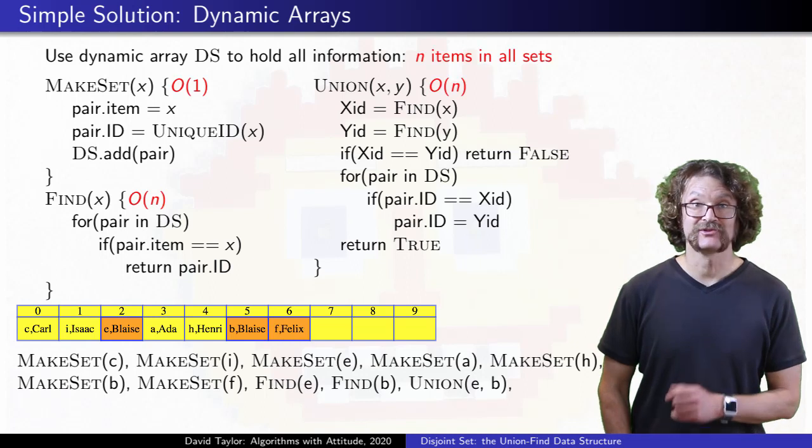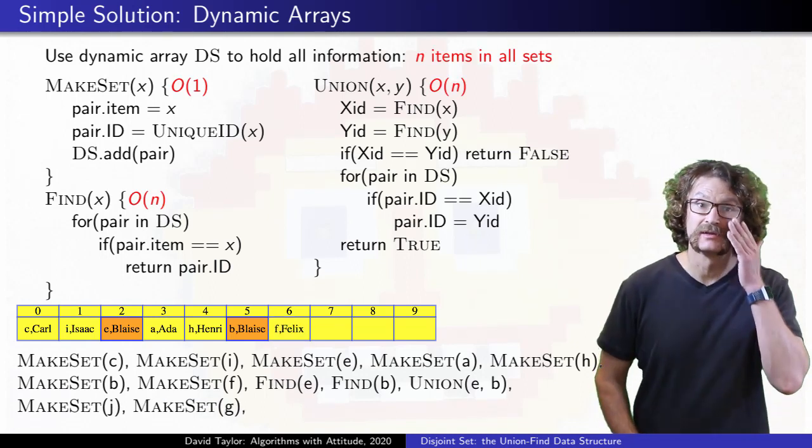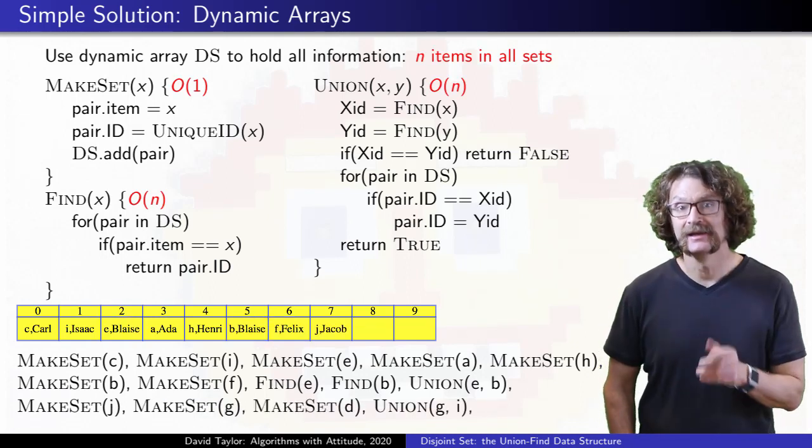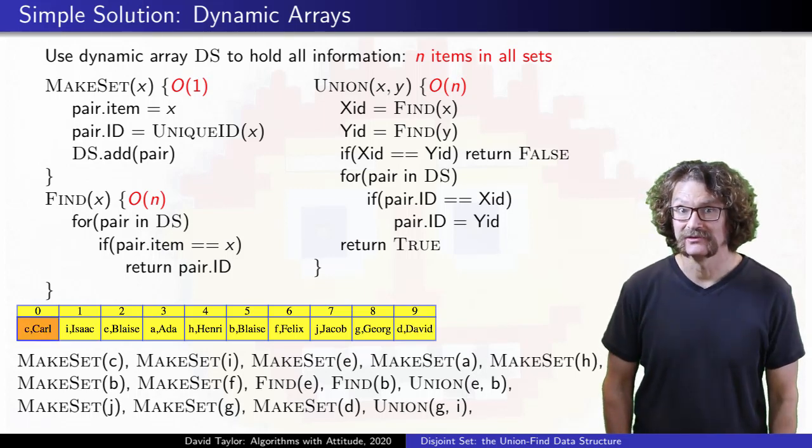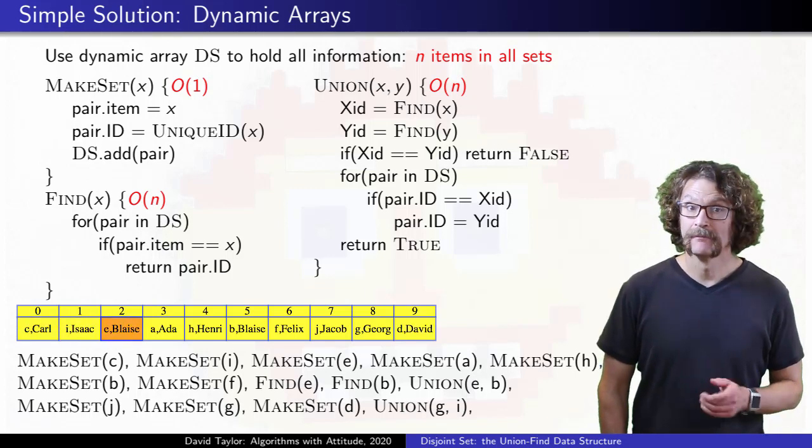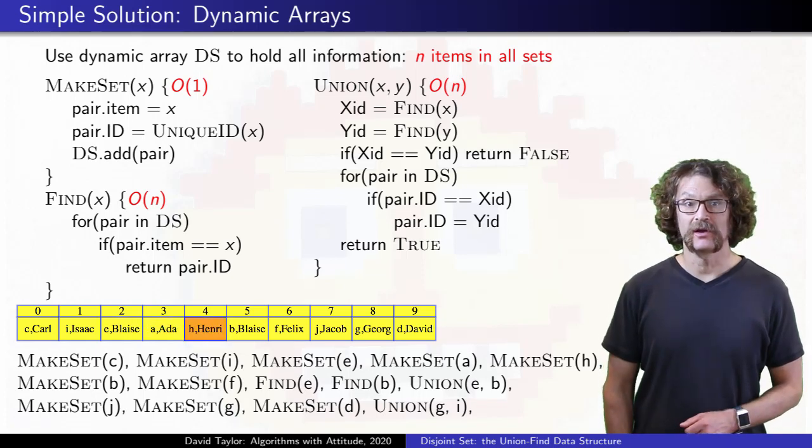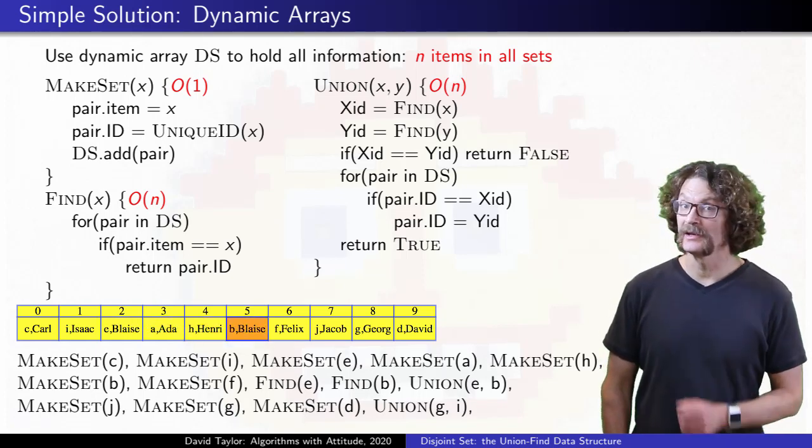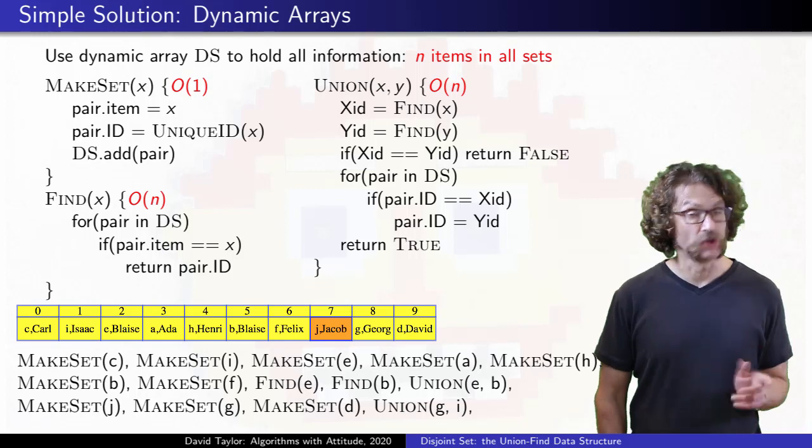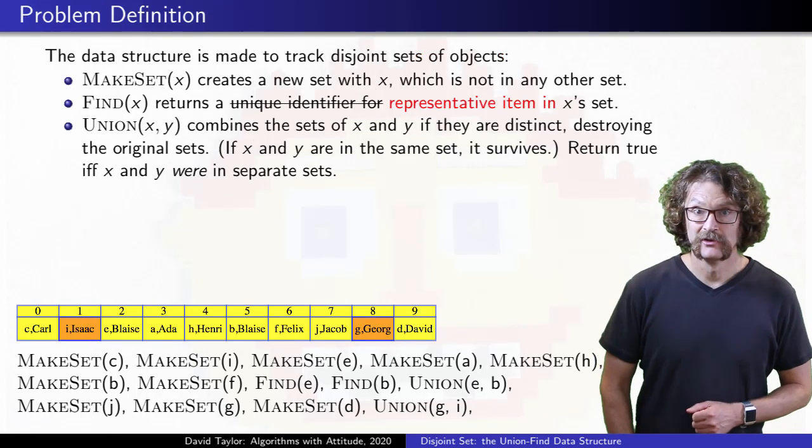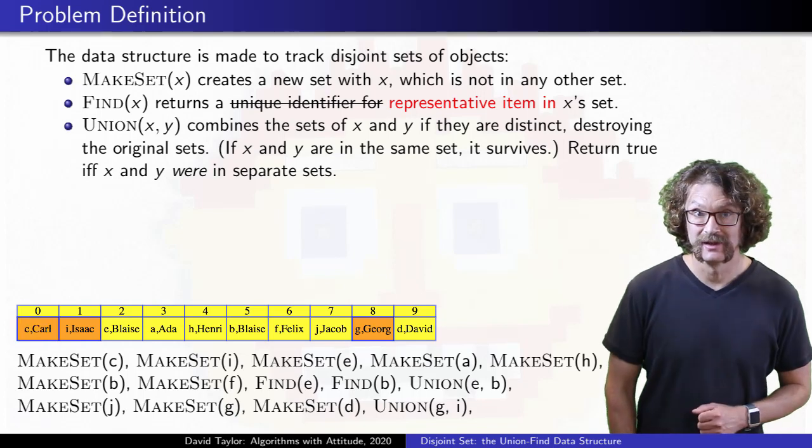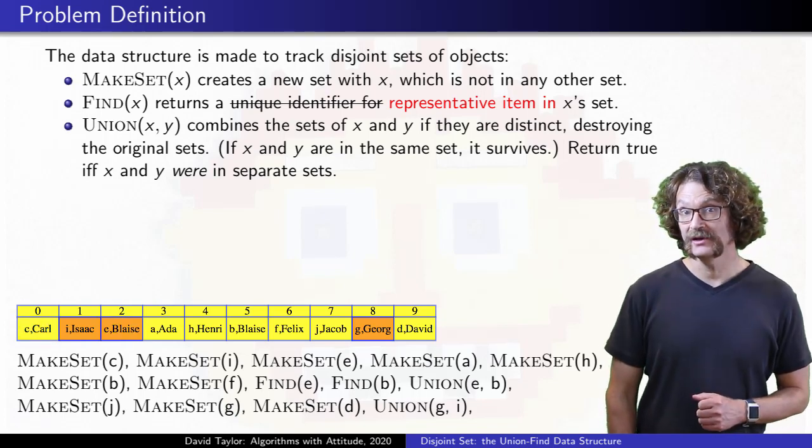Adding an item takes average constant time, but find and union can take time N, if there are N items, and you have to come up with unique IDs. That's not too hard, but why not just use the objects themselves? That's easy. That's why I named my dog, Dog. Each object is distinct, and sets are distinct, so if each set has one object that it uses as its representative, that works.